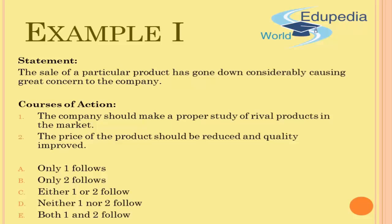Evaluating course of action two: the price of the product should be reduced and the quality should be improved. Is this relevant to the problem? Yes — diminishing sales could be addressed by reducing price and improving quality. Is it of appropriate magnitude? Yes, it pertains to the product sales problem. But does it create any undesirable outcomes?